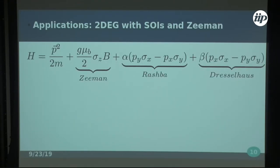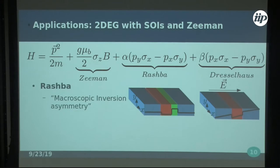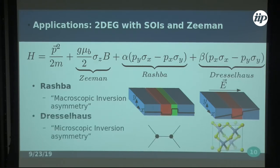The first application is to the Rashba plus Dresselhaus Hamiltonian. This is a common Hamiltonian where Rashba comes from microscopic inversion symmetry breaking — an asymmetry in your quantum well — while Dresselhaus comes from bulk inversion symmetry breaking inside the crystalline structure, for example a basis in graphene that breaks inversion, giving these terms from k·p theory and k·p models.